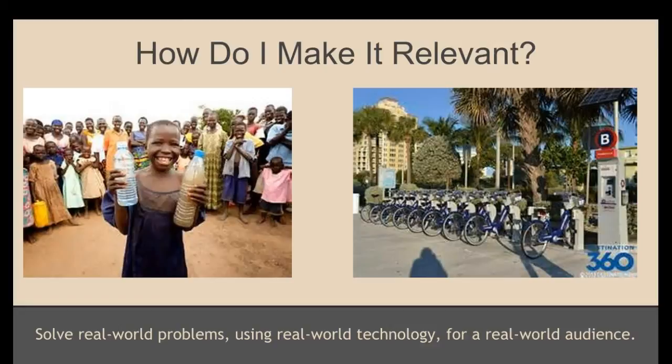Students should use real-world technology and resources, and present to a real-world audience — whether that's through a website, presenting at a conference, writing a letter to a congressperson, or similar. Those are the three criteria for making things relevant in the classroom. The last page of the ICLE document attached to this module contains an application design tree, which can help you identify the level of relevance for your instruction and planned activities.